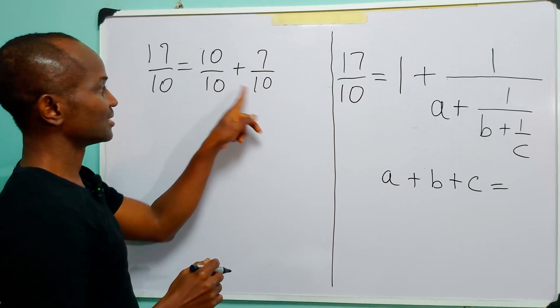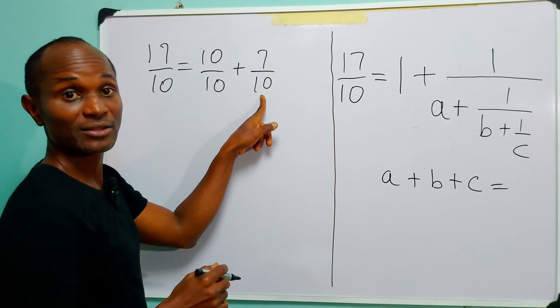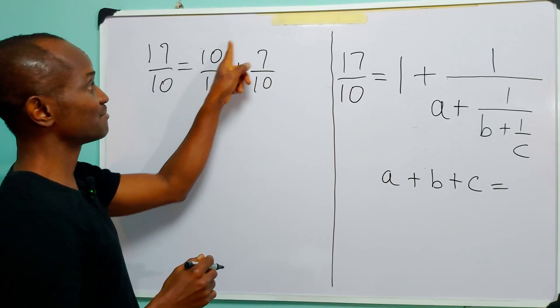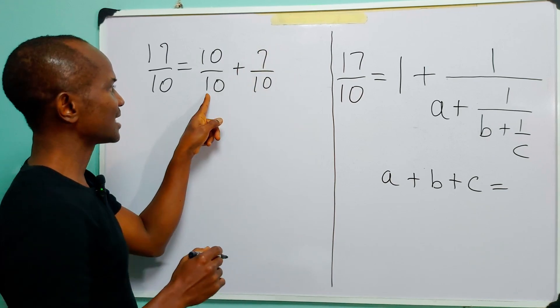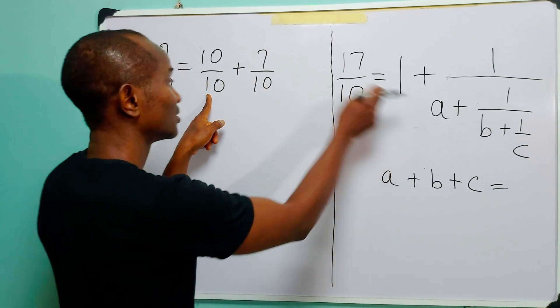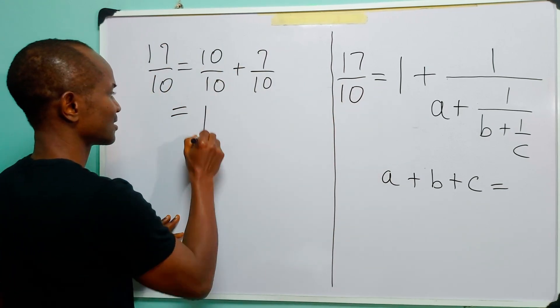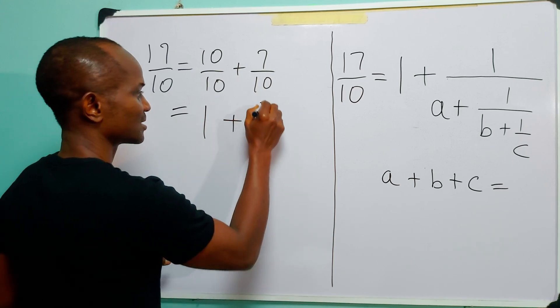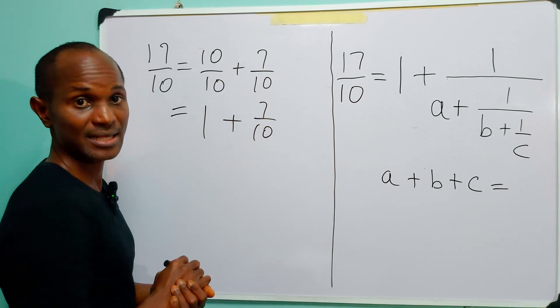Since these two fractions have the same denominator, to get this number, we simply add the numerators. But you can see that 10 over 10 is 1. So what I have written here is 1 plus 7 over 10.